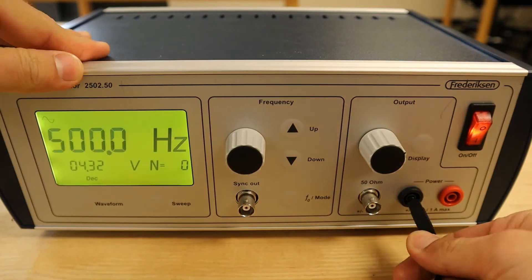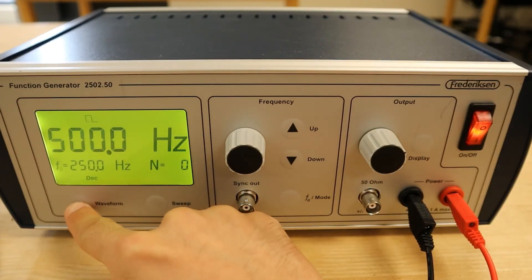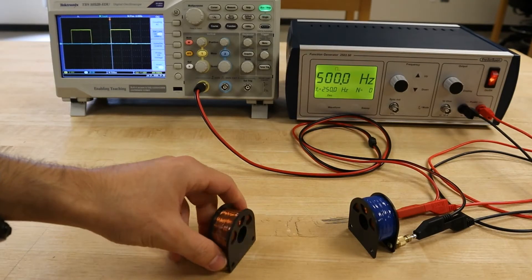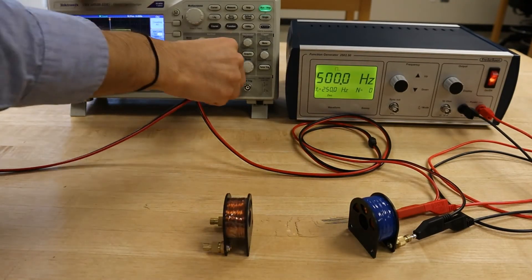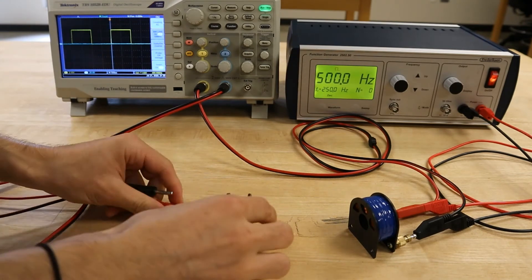The function generator should be set to produce a 500 Hz square wave this time. Next, we will connect the same ghillie coil that we used in the previous procedure to the second channel of the oscilloscope using another BNC to banana cable.